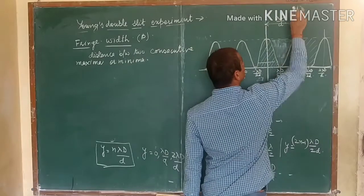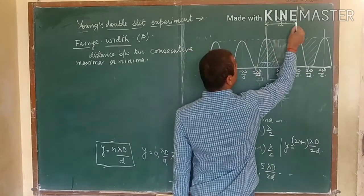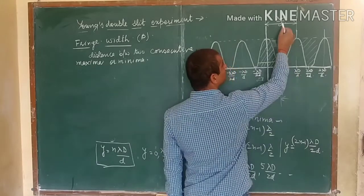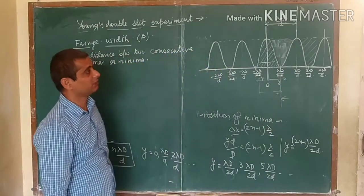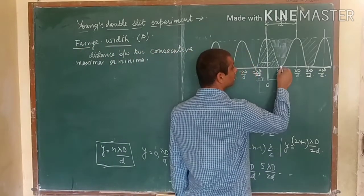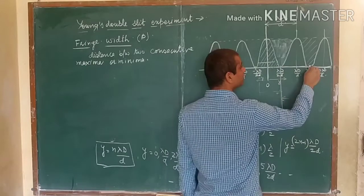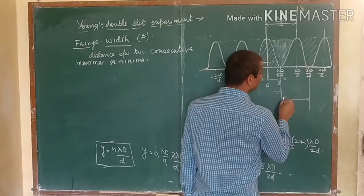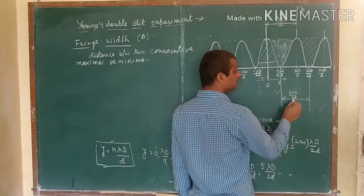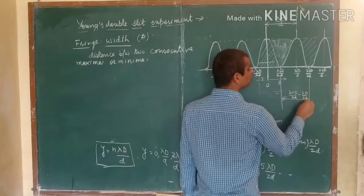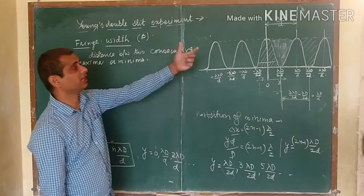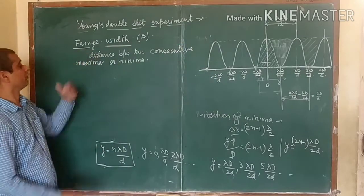The first maximum is at zero and the second maximum is at λD/d, so the distance between them is λD/d — this is your fringe width. Similarly, for the two consecutive minima: the first minima and second minima positions give a distance of (3λD/2d) minus (λD/2d), which gives λD/d. So again you find the same value.